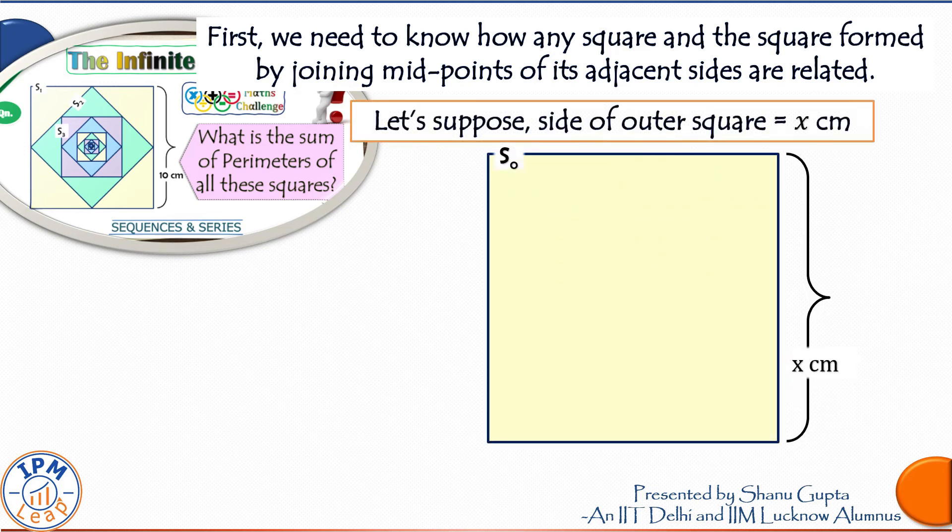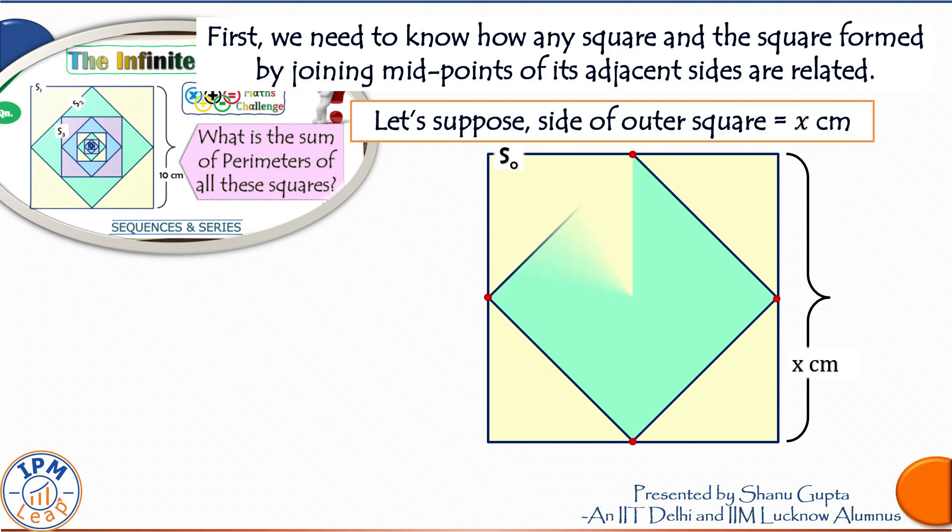So let us suppose side of outer square is equal to x cm. This is the side of outer square, which we can call SO. O stands for outer. And now let us draw the inner square, which we can call SI. I stands for inner.